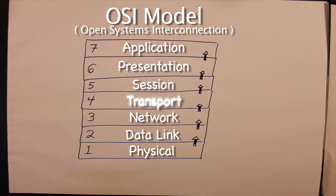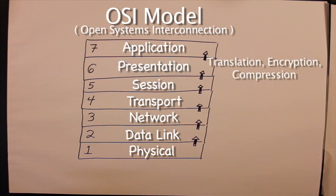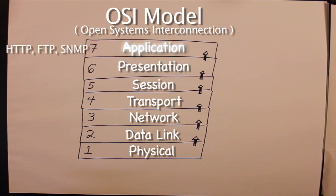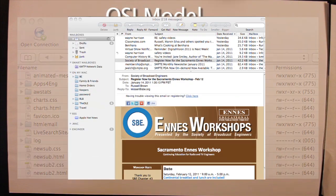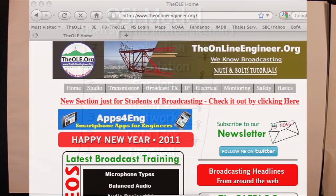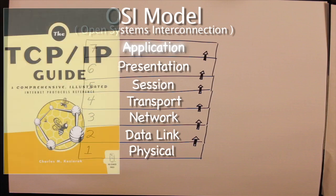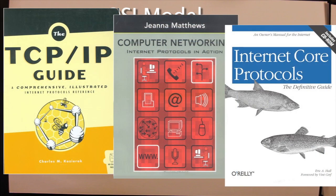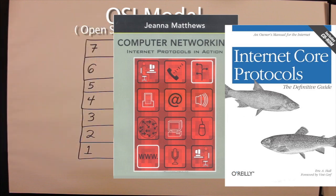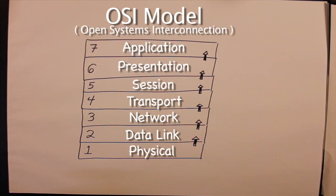The rest of the layers are concerned with higher functions from transport to session, presentation, and finally layer 7, application, where data is sent and received by network applications that use it, such as HTTP or FTP. This, of course, is a very simplified explanation of the OSI model. Please explore more information about it on the web or in books for a more thorough understanding.